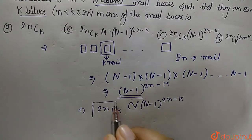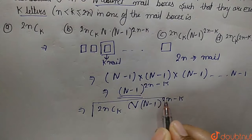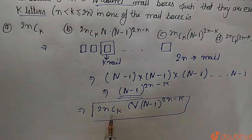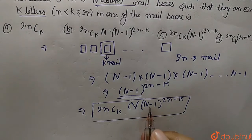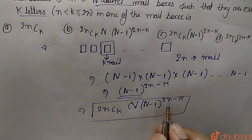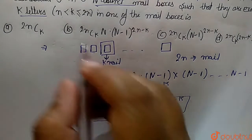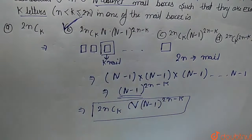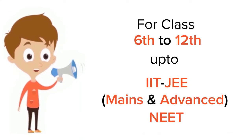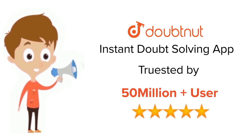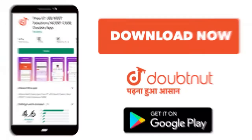So the total number of ways that exactly k distinct letters can be put in one mailbox is 2nCk × n × (n−1)^(2n−k). This means option B is the correct answer for this question. For class 6–12, IIT JEE, and NEET level — trusted by more than 5 crore students — download the DoubtNet app today.